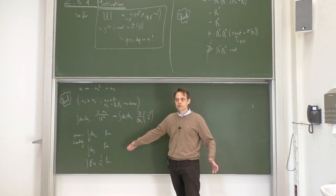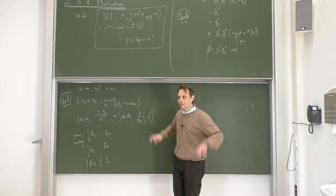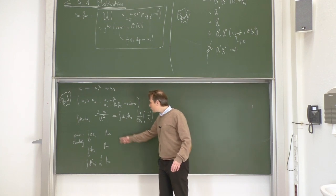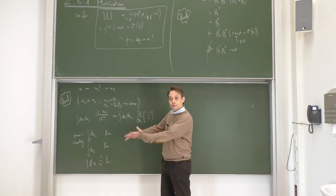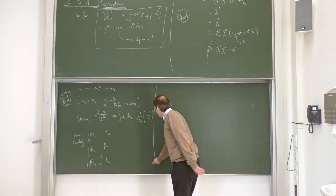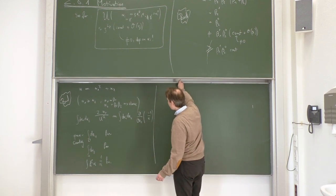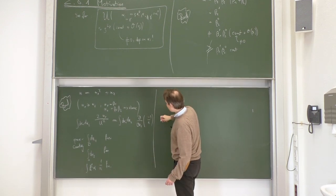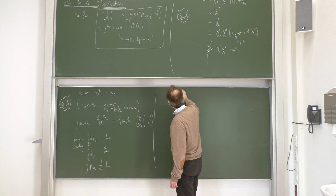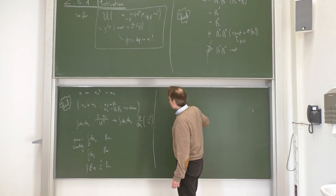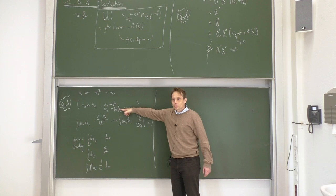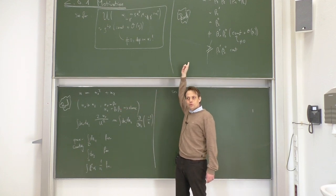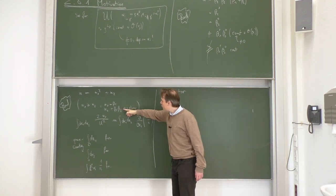That is what we have done here — all subdiagrams are power counting finite. But the integral is actually divergent. We can do a sector decomposition and look into the sector α₁ ≥ α₂, which reproduces the beta function from above.